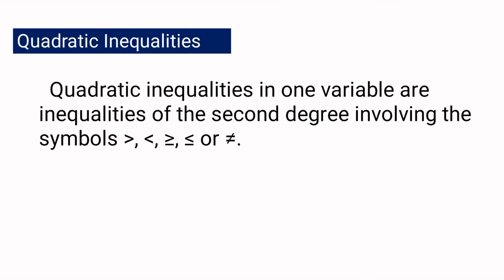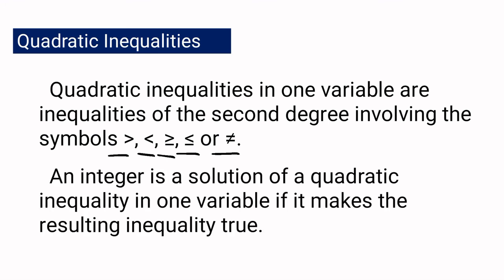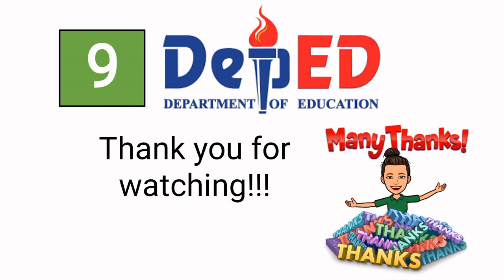To summarize: quadratic inequalities in one variable are inequalities of the second degree involving the symbols greater than, less than, greater than or equal to, less than or equal to, or not equal to. An integer is a solution of a quadratic inequality in one variable if it makes the resulting inequality true. That's it for today. This is Ma'am Sheila — thank you for watching!